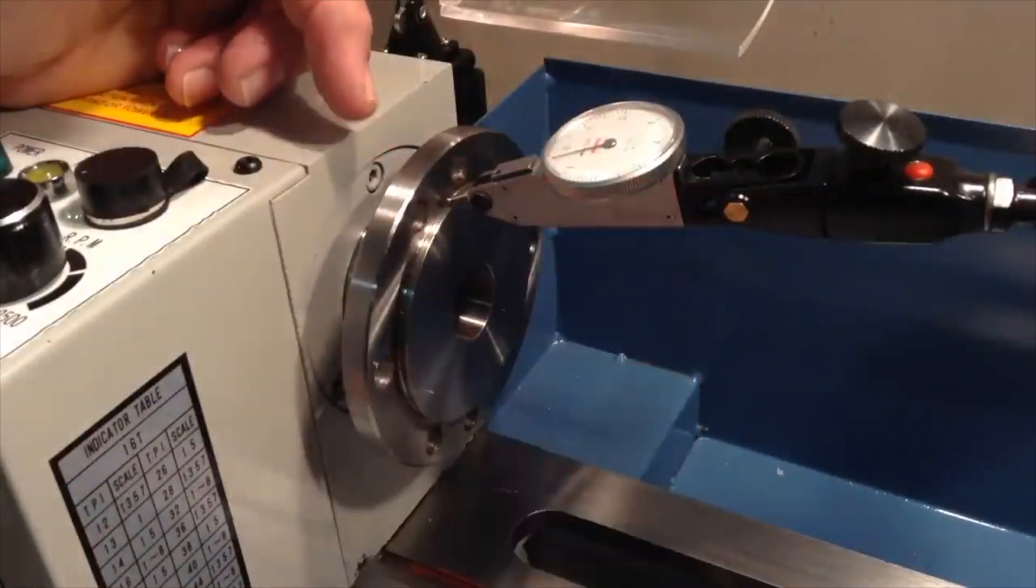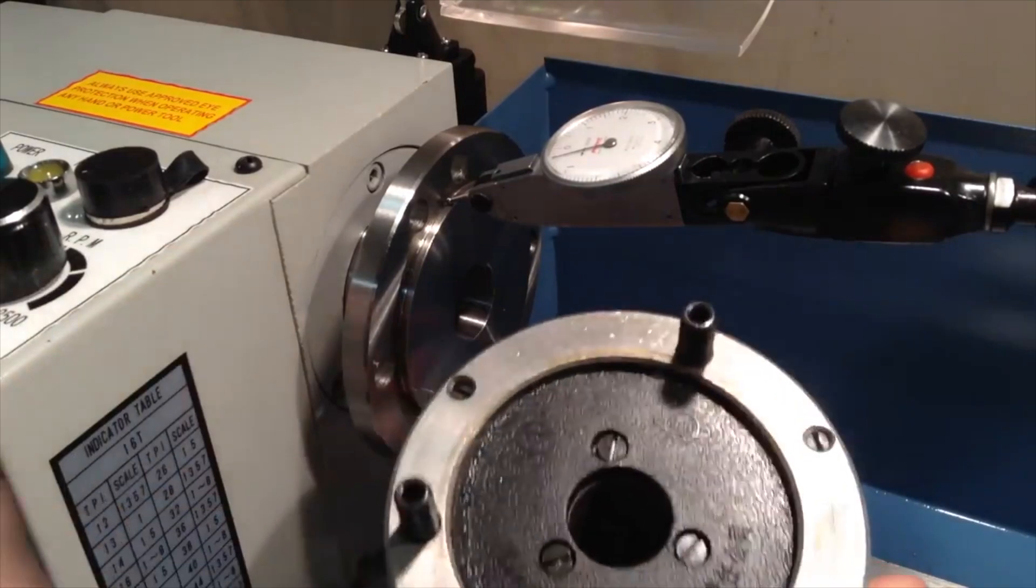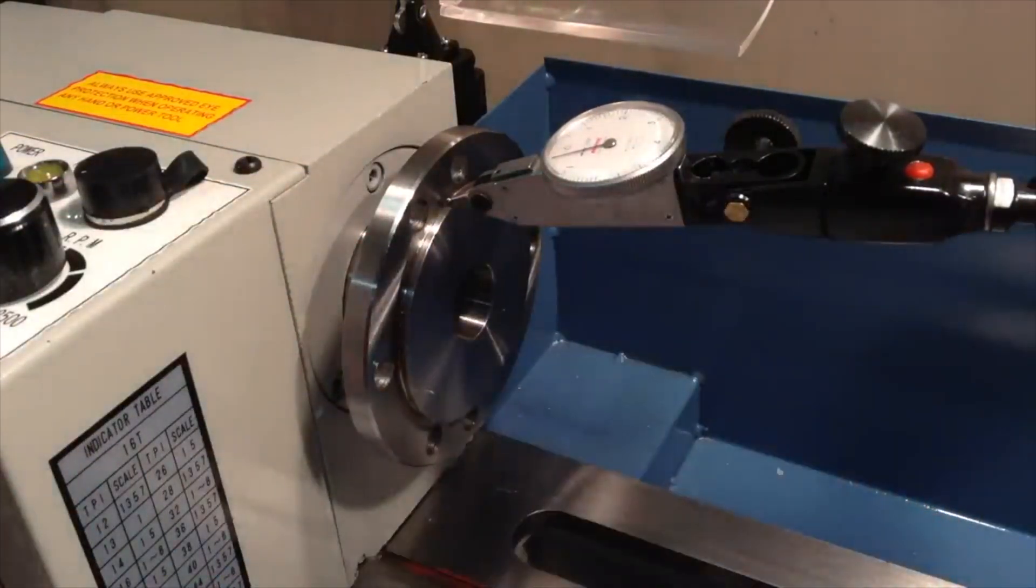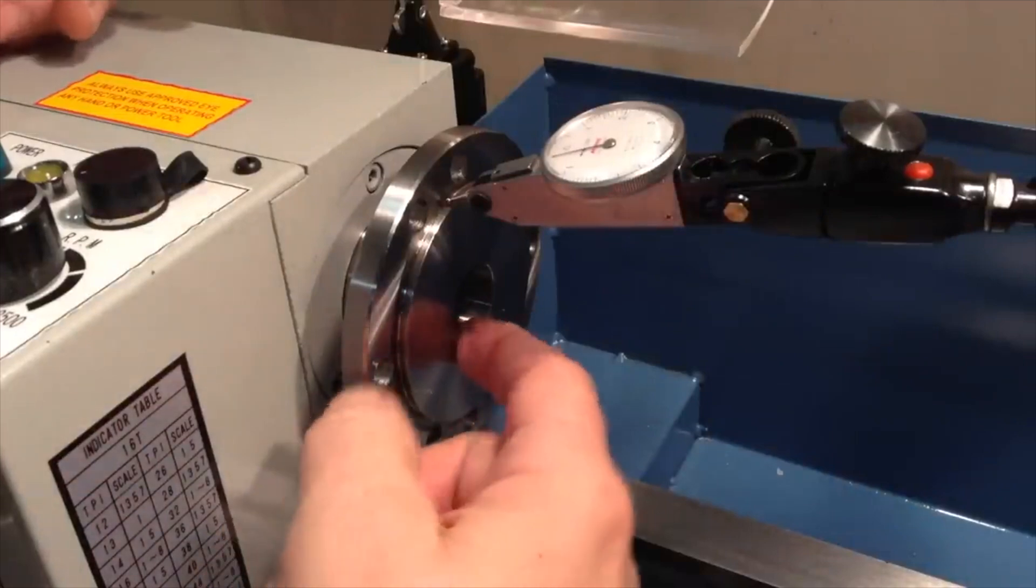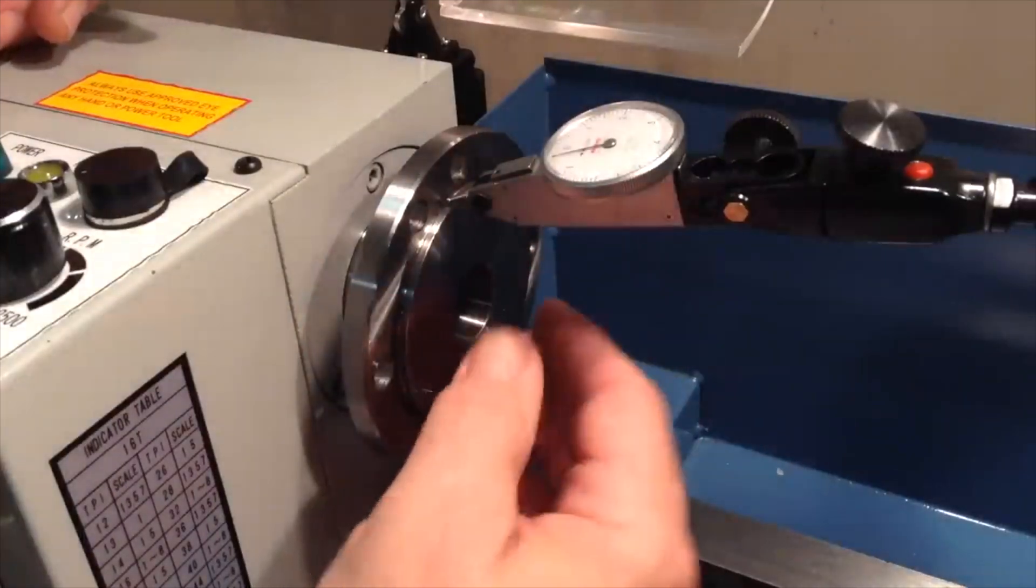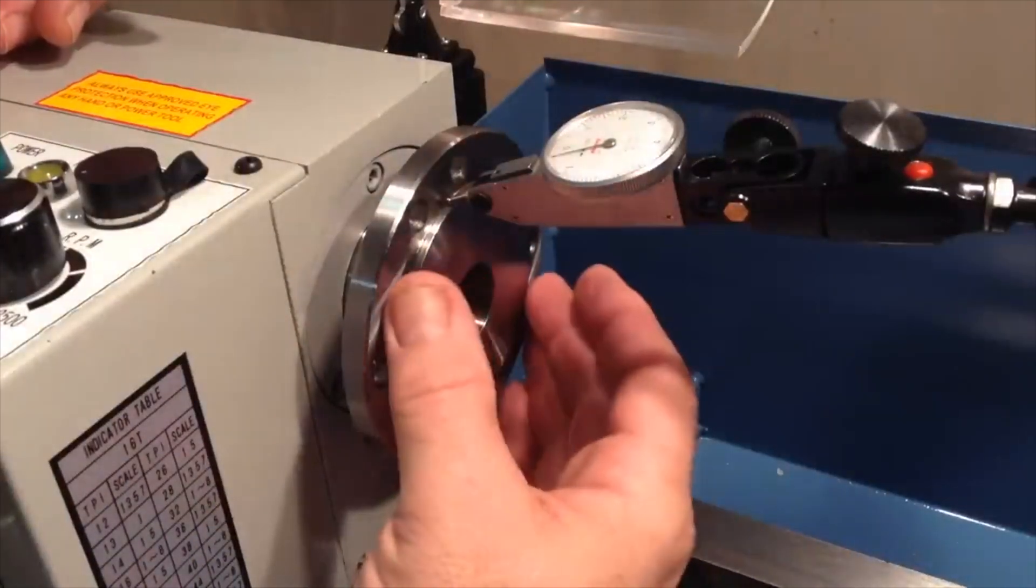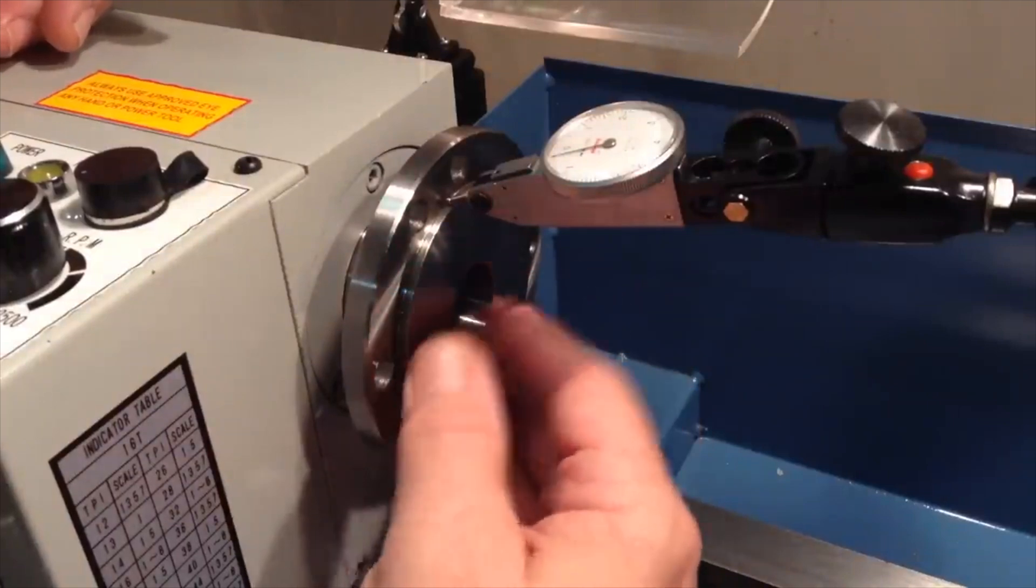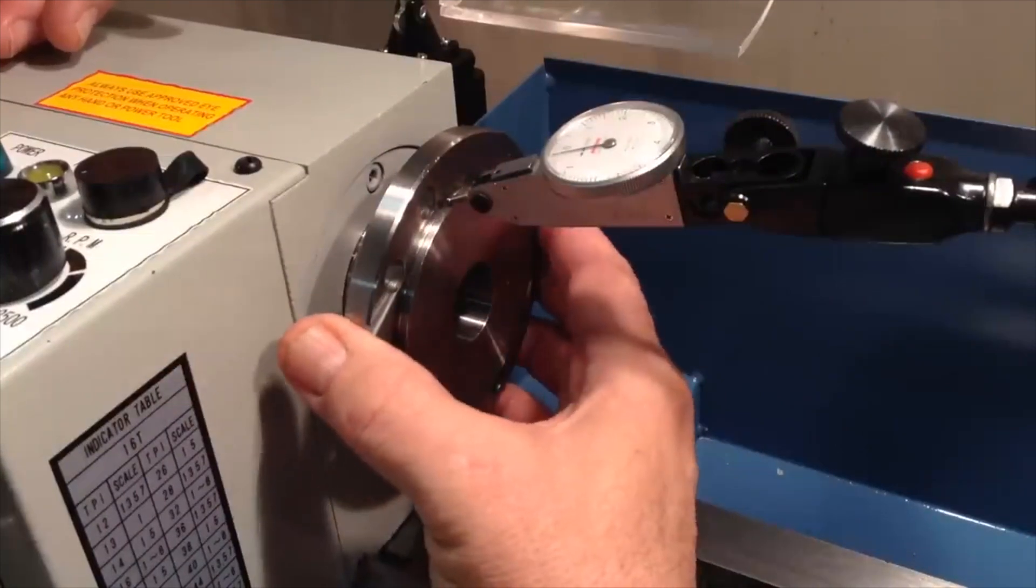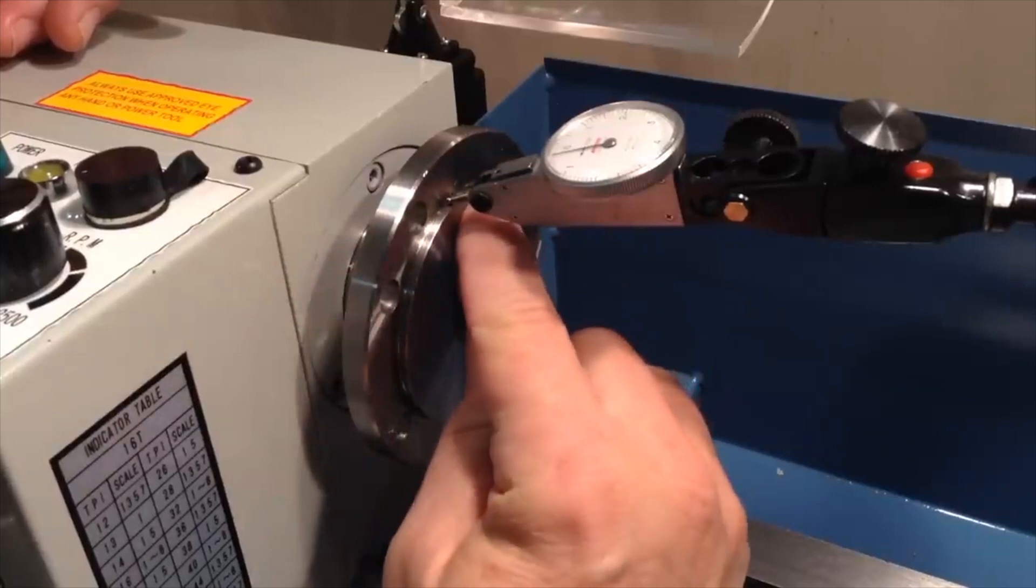The other dimension I like to check for run out is the surface of this boss or raised area here on the spindle, because that's the registration surface that engages with this recess on the back of the chuck and so it determines the alignment of the chuck on the spindle. So if your spindle was very concentric and had very little run out, if this surface was machined off-center from that then you could still have a fair amount of run out in the chuck because the chuck is going to register up against this surface.